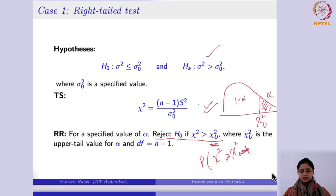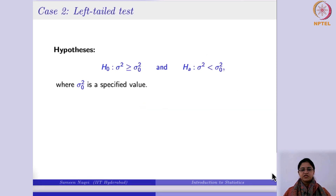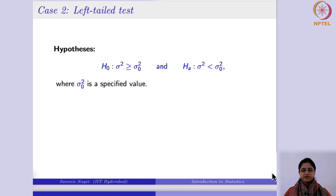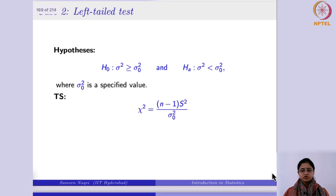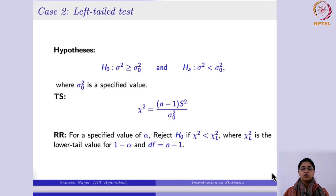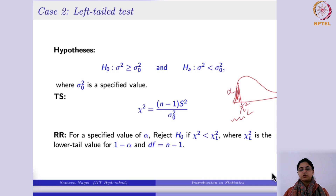For the left-tailed test, you are verifying whether the population variance is less than the hypothesized population variance. The test statistic is the same, calculated under the null hypothesis, but now you work with the lower tail critical value chi²_L. If the computed test statistic falls in the left shaded region — that is, less than chi²_L — you reject the null hypothesis.